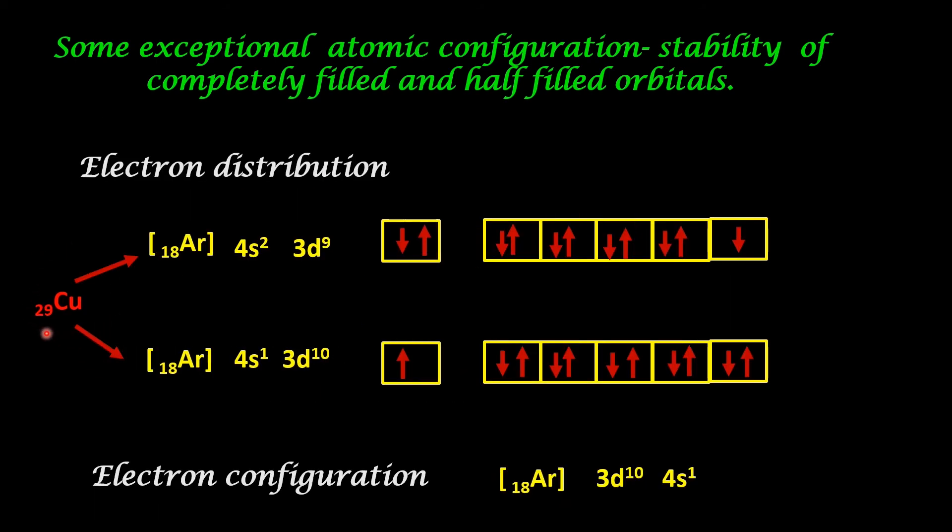The atomic number of copper is 29. These are the two possible ways it can be arranged. When we normally arrange it, we arrange it in this way. Argon 18, 4s2, 3d9. As you can see, this arrangement is not symmetrical. So it is not stable. The second arrangement has argon 18, 4s1, 3d10. D sub shell is completely filled. So there is symmetry and there is less shielding effect and therefore it is stable. So the second option is correct.